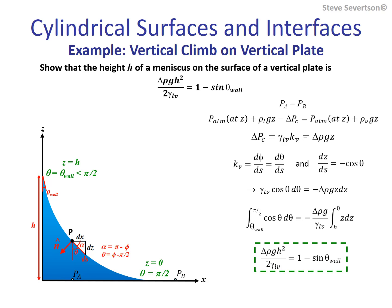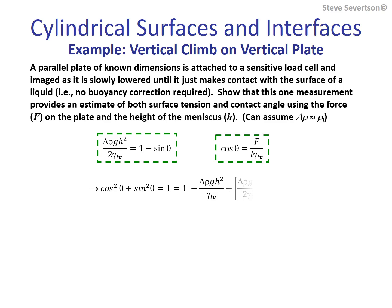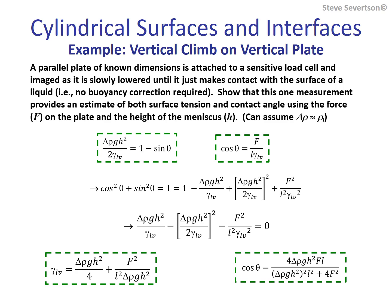Here we apply the results from the last example in combination with the Wilhelmi equation for which the contact angle of a liquid on a plate surface is not zero. The experimental setup allows measurement of both the force on the plate and the height of the meniscus. A reasonable first step is to square both the cosine and sine functions and sum them equal to one. From here, algebra yields expressions for both the surface tension and contact angle in terms of measured quantities, plate dimensions, and the density of the liquid.